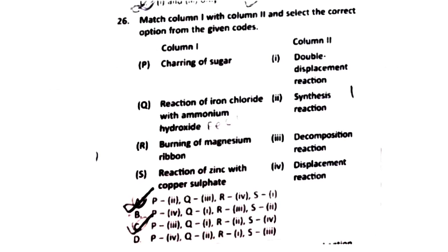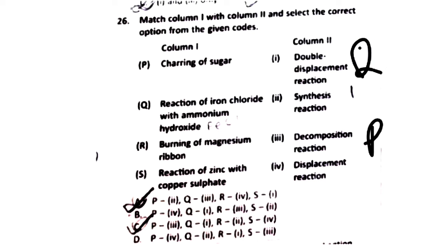Question 26: Match Column 1 with Column 2. P: Sharing of sugar — Decomposition reaction. Q: Reaction of iron chloride with ammonium hydroxide — Double displacement reaction. R: Burning of magnesium ribbon — Synthesis reaction. S: Reaction of zinc with copper sulfate — Displacement reaction. The right answer is Option C.